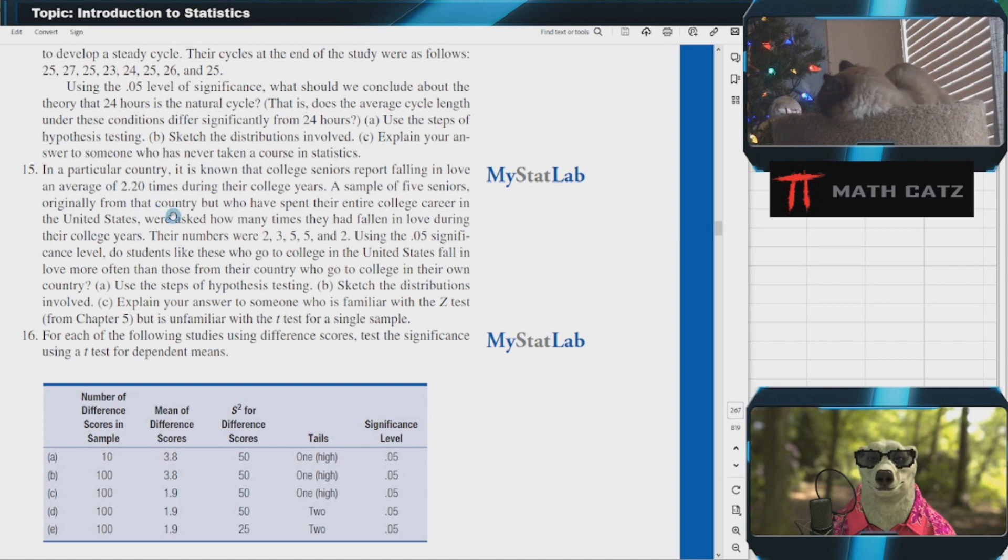If they stay in their country, the mean distribution of this property they're measuring is 2.2. We want to see if it is more.